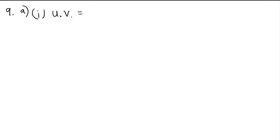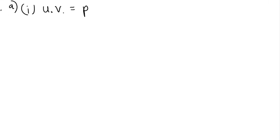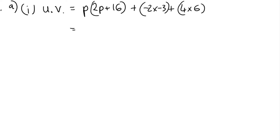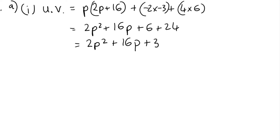Question 9a part 1: find an expression for u dot v. If given the components, multiply corresponding components and add. So p times 2p plus 16, plus negative 2 times negative 3, plus 4 times 6. That gives 2p squared plus 16p plus 6 plus 24, which is 2p squared plus 16p plus 30.